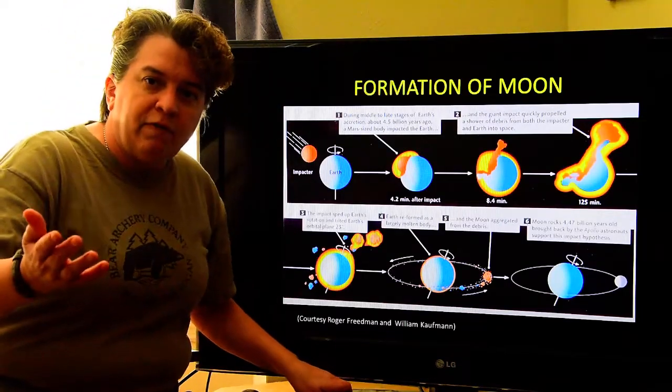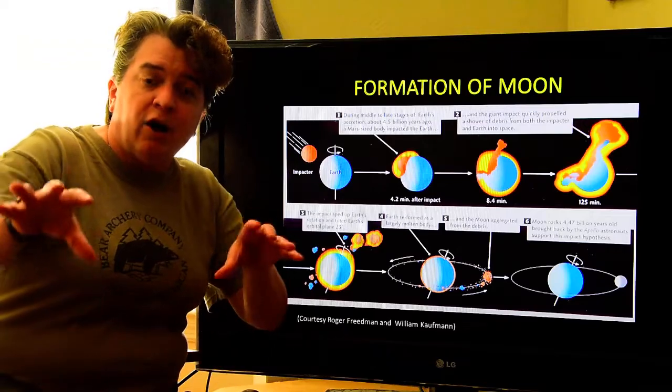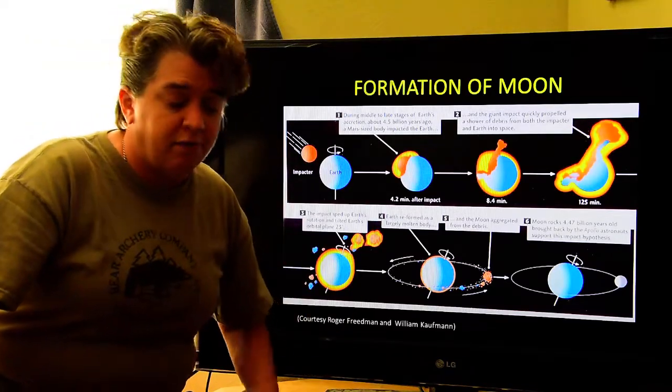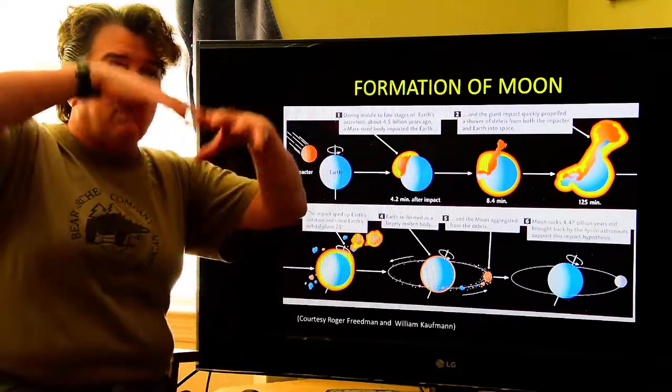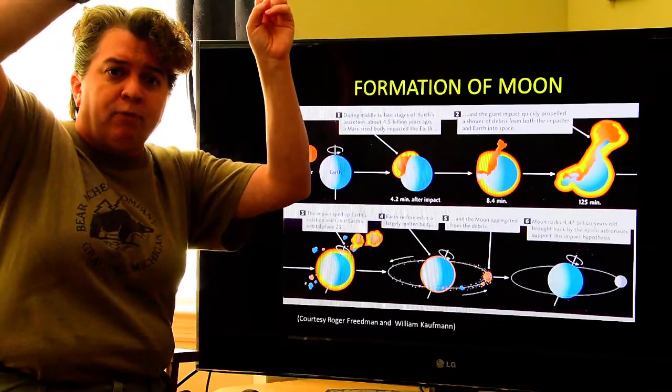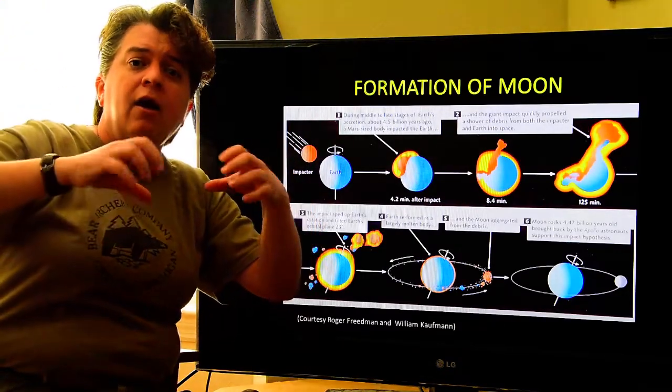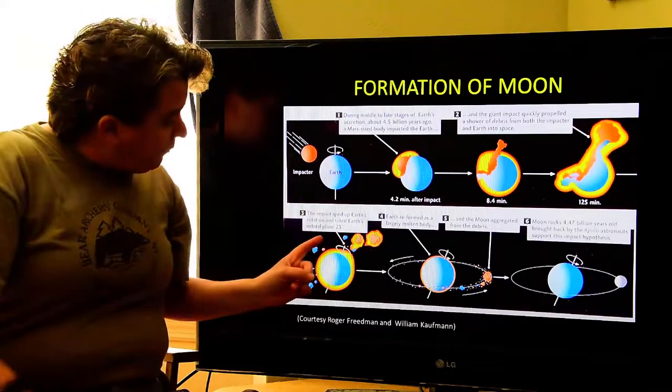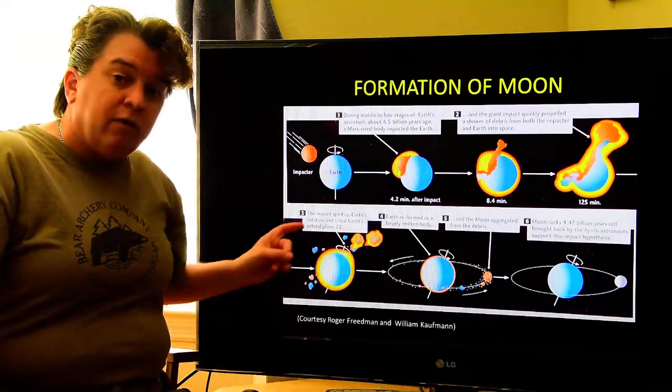And so, just like a meteorite that would hit today is going to kick up a bunch of debris. Now imagine a planet-sized meteorite hits. It's going to hit, and it's going to throw up a whole bunch of debris, both from the impactor and from Earth itself. And this stuff goes into orbit around the planet.